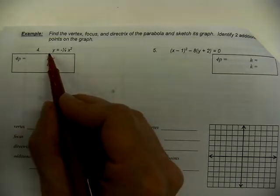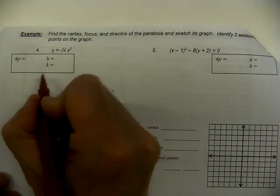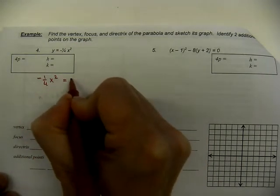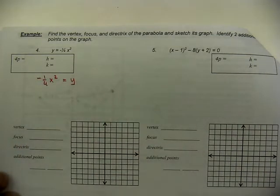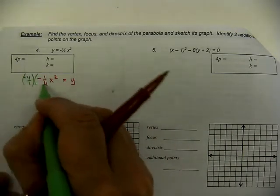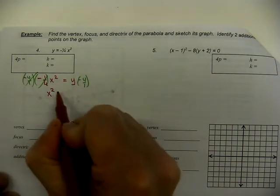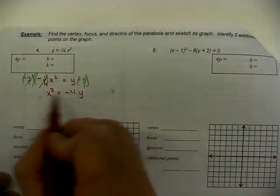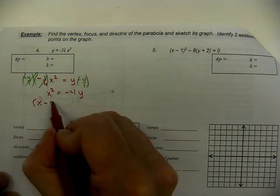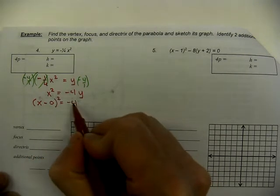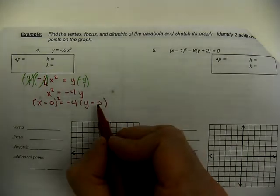Here's problem four. This is not in the standard form we want — we want the term with the power of two on the left. So let's flip-flop the equation around. Furthermore, we want the coefficient on the x² to be one, so multiply both sides by negative four. Now we have x² = −4y. Expanding this: behind the x is the h, but there's no number, so h is zero. On the right-hand side, we have negative four and y minus zero, so k is also zero.